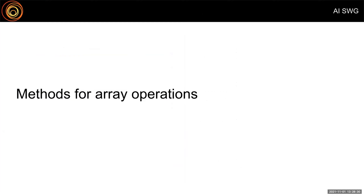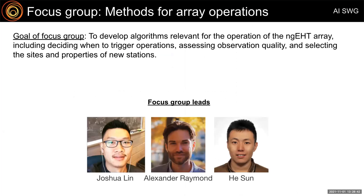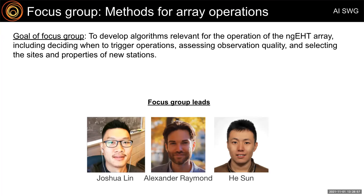The array operations focus group backs away from the physical theory and considers the very practical question of how we might best operate an array like the NGEHT. This group is being led by Joshua Lynn, Alex Raymond, and Hassan. Its aim is to develop algorithms for things like making decisions for whether and when to trigger observations, and for selecting the optimal locations and properties of new sites. The site selection question is immediately relevant because the NGEHT currently doesn't have a finalized reference design, so determining which site and station combinations can optimize across considerations such as UV coverage, sensitivity, imaging fidelity, and total cost is an area of active ongoing effort.